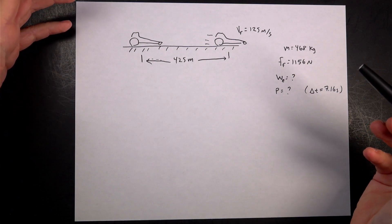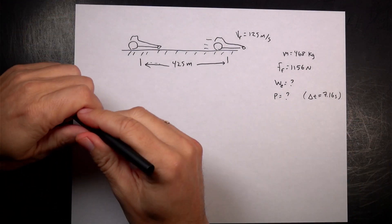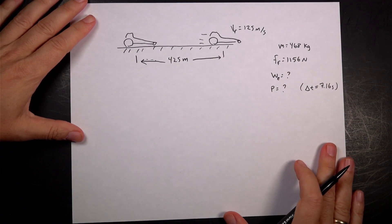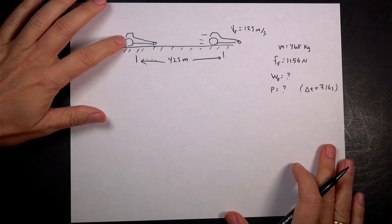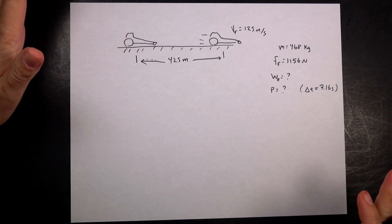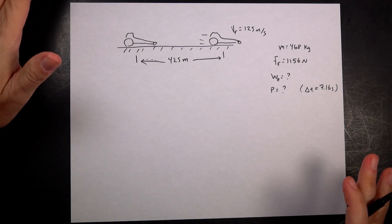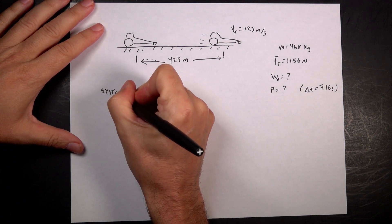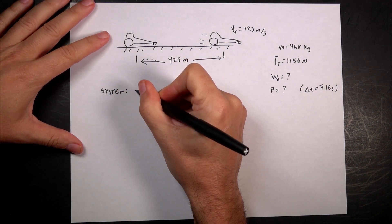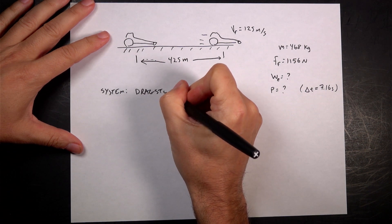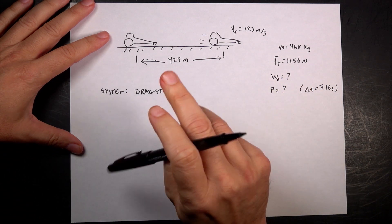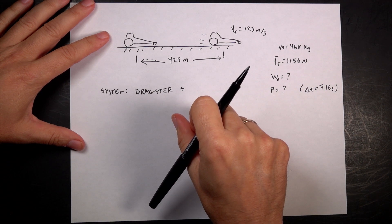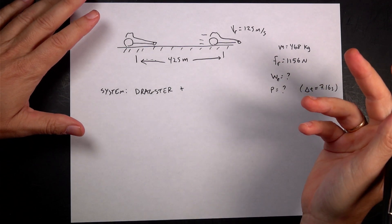Okay, so it's obviously a work-energy problem - they ask for work. Like always, we need to say what our system is. It's strange in this case because the car is both doing work and part of the system. But I would define my system as the dragster plus the engine, which has lots of pieces in it.